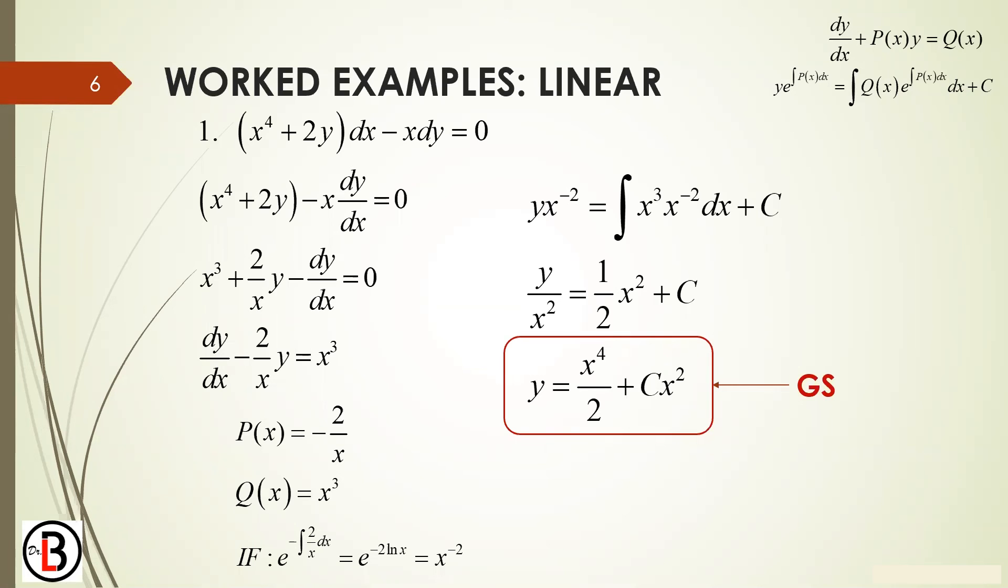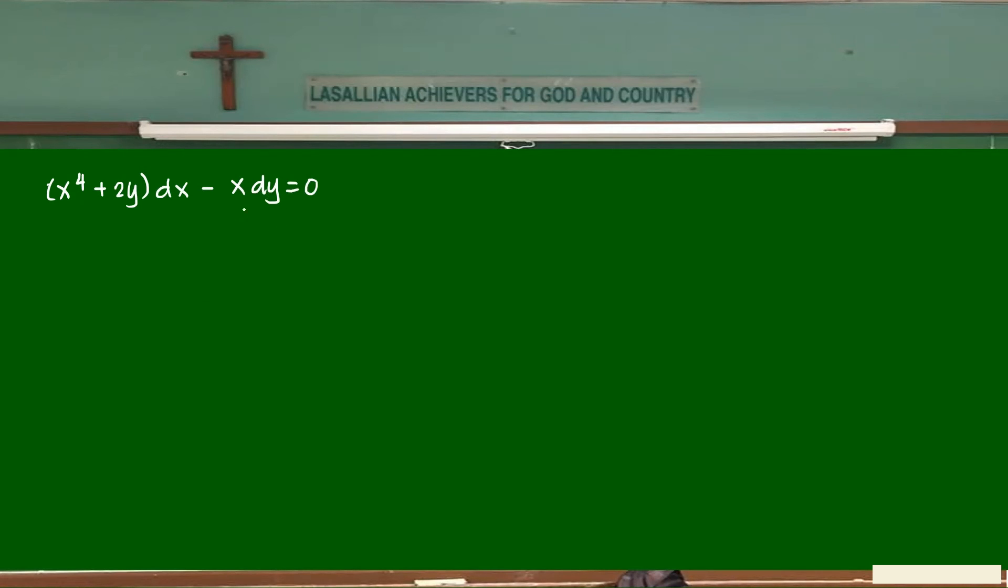Let's go to the example. So in this case, maybe let's try to divide everything by X. (x⁴ + 2y)dx - x·dy = 0. Is it the standard form already? Not yet. What is the standard form? So when we change this to the standard form, that is going to be your step number one. And then test for linearity. dy/dx - 2/X·y = X³. So is it linear or not?